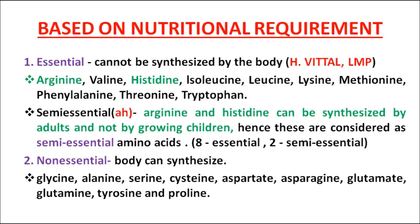Among these 10, two essential amino acids are now reclassified as semi-essential amino acids: arginine and histidine. This is because arginine and histidine are not synthesized in children, but they are synthesized in adults only. So arginine and histidine are semi-essential amino acids. For MCQ purposes: essential amino acids are 8 in number, two are semi-essential (arginine and histidine), and the rest are non-essential amino acids.